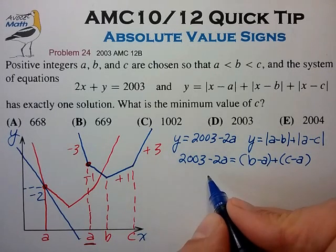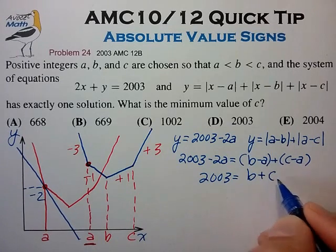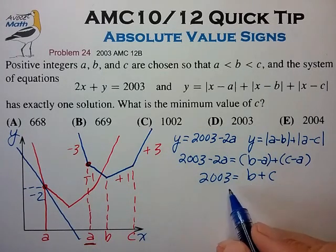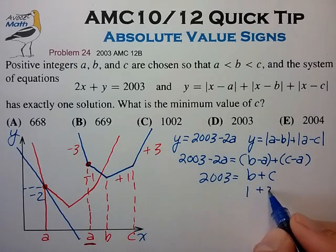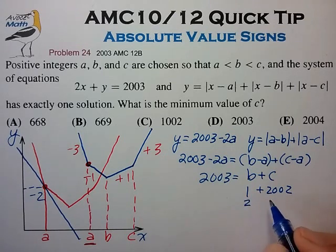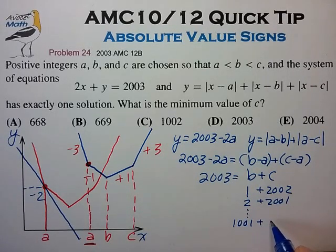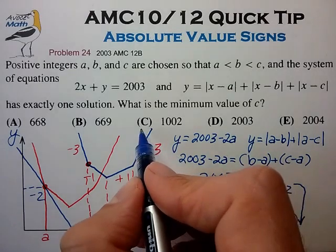From which we then find that 2003 is equal to b plus c. And now we can see what values of b and c can satisfy this. We can certainly let b is equal to 1 and c equal to 2002, or b is equal to 2, c is equal to 2001, and all the way up to 1001 and c is equal to 1002. So 1002 is the minimum value of c for choice c.